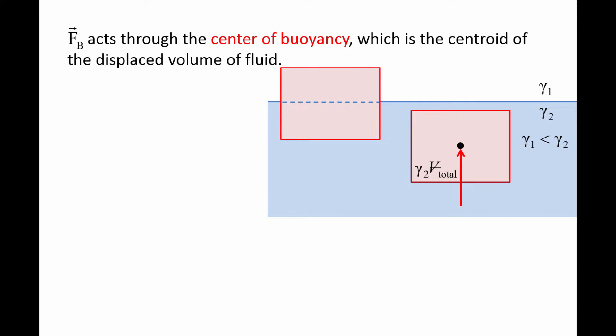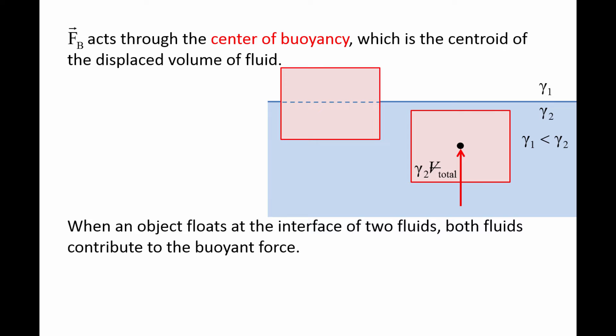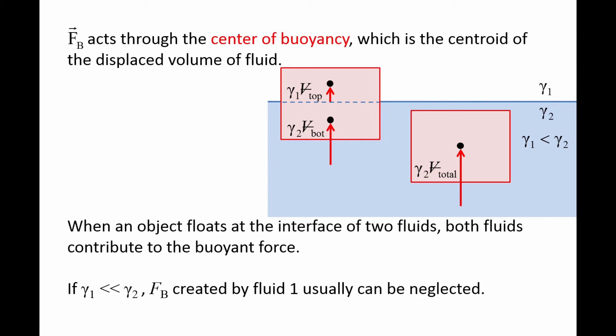Many objects float at the surface of a liquid. On the left, we have a different block that is resting at the interface between fluids 1 and 2. That means the block is partially submerged in fluid 1 and partially submerged in fluid 2. When an object floats at the interface of two fluids, both fluids contribute to the buoyant force. A buoyant force acts on the centroid of the bottom section of the block which is submerged in fluid 2. This force is equal to gamma 2 times the volume of the bottom section of the block. A buoyant force also acts at the centroid of the top section of the block which is submerged in fluid 1. This force is equal to gamma 1 times the volume of the top section of the block. If the specific weight of fluid 1 is much less than the specific weight of fluid 2, for example, if fluid 1 were air and fluid 2 were water, then we can usually neglect the buoyant force on the top section of the object.